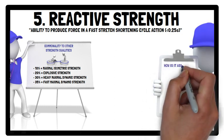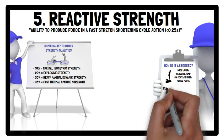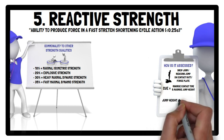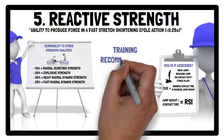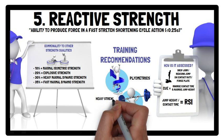Reactive strength can be assessed by performing a drop jump or rebound jump on a contact mat or force plate, with the cue to minimise contact time and maximise jump height. By dividing the jump height by the contact time, the reactive strength index can be determined. It should be noted that the drop jump test requires extensive familiarisation, and feedback after each trial is needed to ensure contact time is less than 0.25 seconds. In terms of training, plyometrics adopting a fast stretch-shortening cycle is recommended as the primary method, while slow stretch-shortening cycle plyometrics and heavy strength training can also be used as secondary methods.